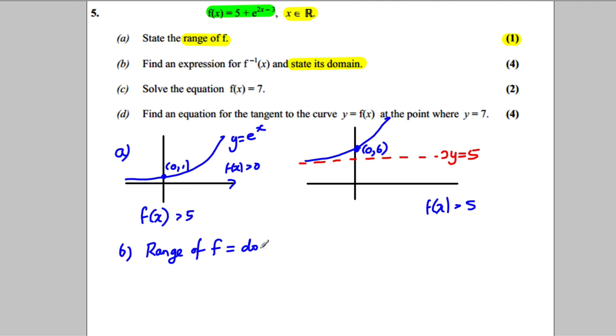The range of f would be equal to the domain of the inverse. Now because in part a we know the range of f, we know the domain and the domain is going to be x is bigger than 5 so this is an easy part of it but let's find the expression.